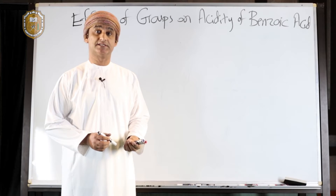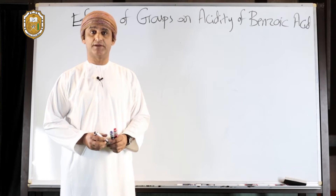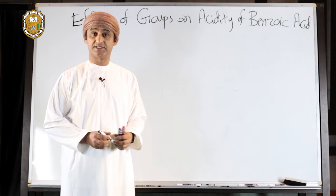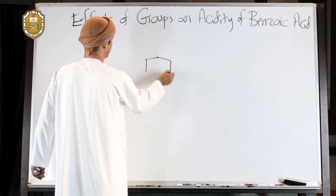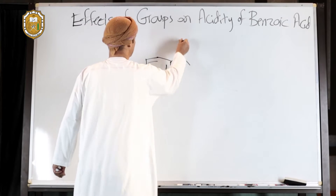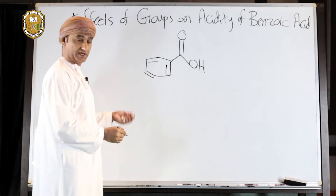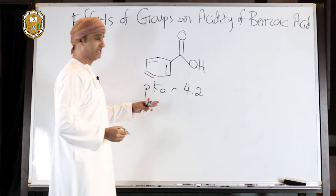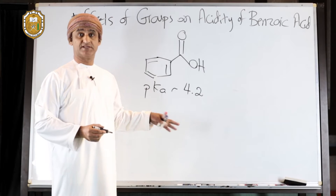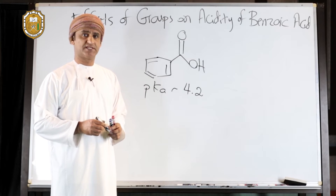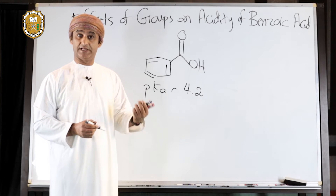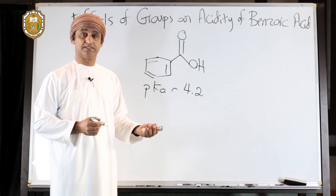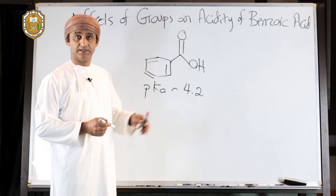Benzoic acid, being a carboxylic acid, is actually acidic. Let's draw the structure of benzoic acid. The pKa of benzoic acid is about 4.2, which is slightly less than that of a normal carboxylic acid. This is because of the further delocalization of electrons, which results in slightly higher acidity than non-aromatic carboxylic acids.